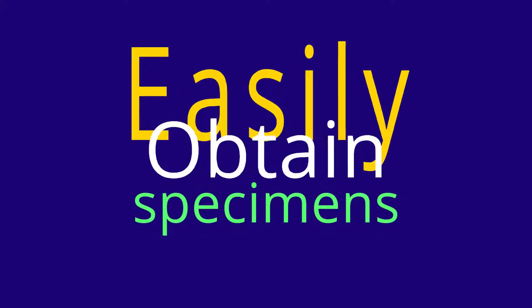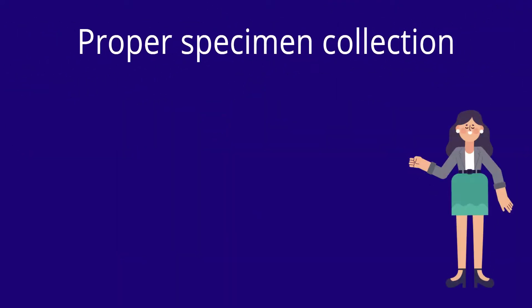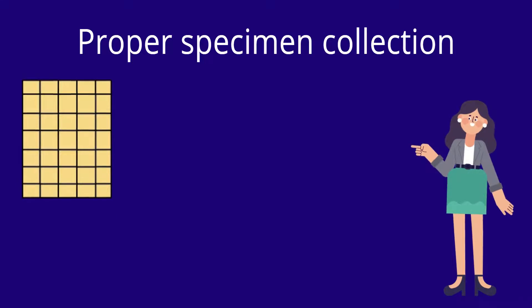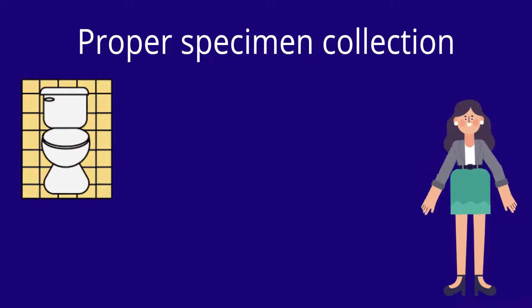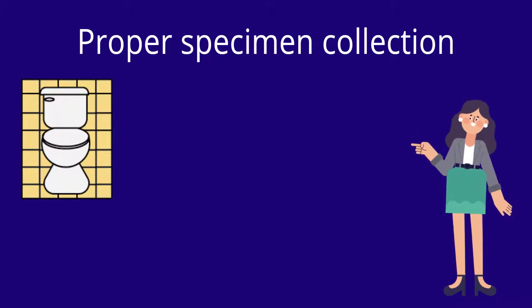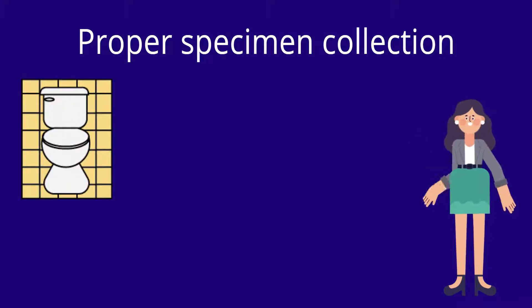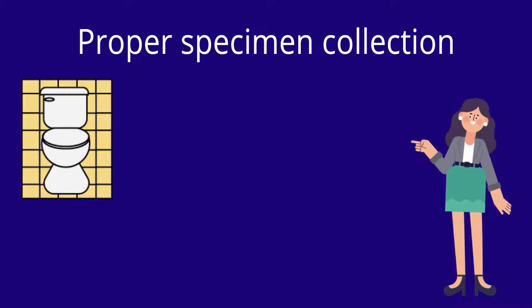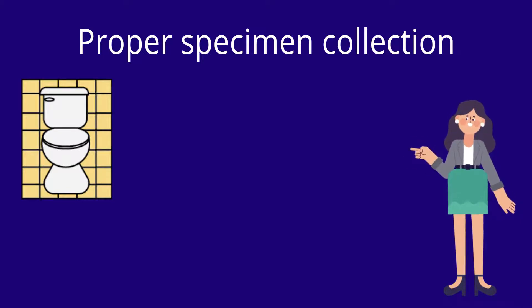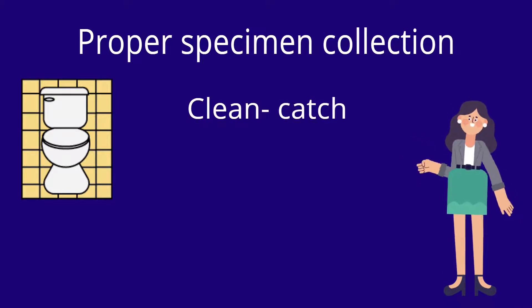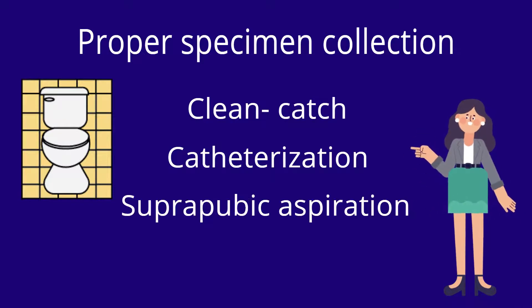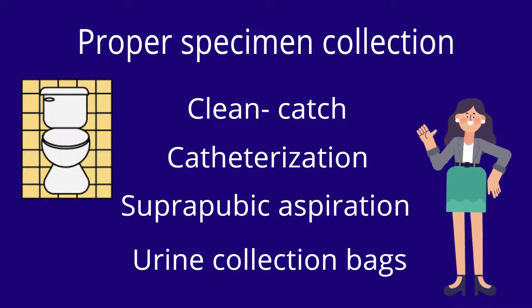Accurate test results begin with proper specimen collection. Urine specimens are not hard to obtain, but there are several methods available if needed, such as clean catch, catheterization, suprapubic aspiration, and urine collection bag.